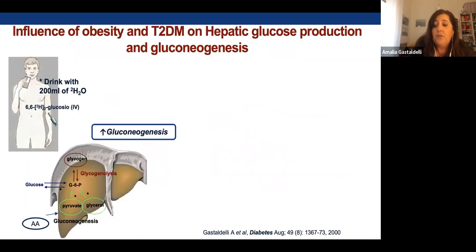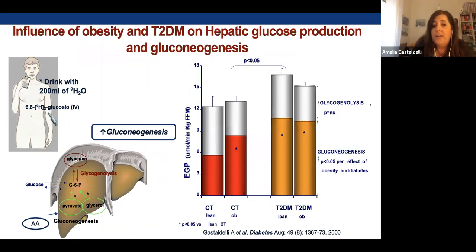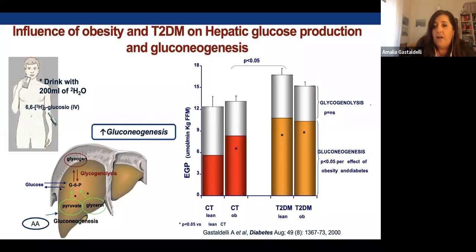Using isotopes, it is also possible to measure the fraction of glucose production due to gluconeogenesis versus glycogenolysis. We did this by having people drink about 200 mL of deuterated water, sampling after an overnight fast. Non-diabetic subjects have similar glucose production, but the amount of gluconeogenesis is much higher in obese compared to lean subjects. In diabetics, glucose production is increased — a major cause of fasting hyperglycemia — and gluconeogenesis is also increased, while glycogenolysis is not suppressed and the total amount is much higher than in controls.